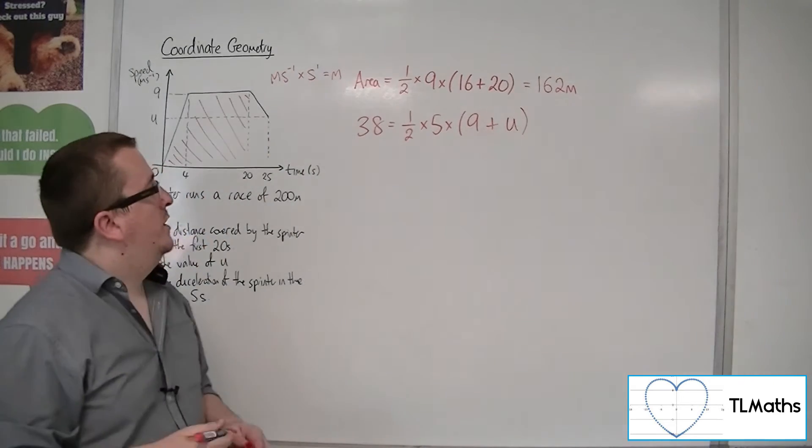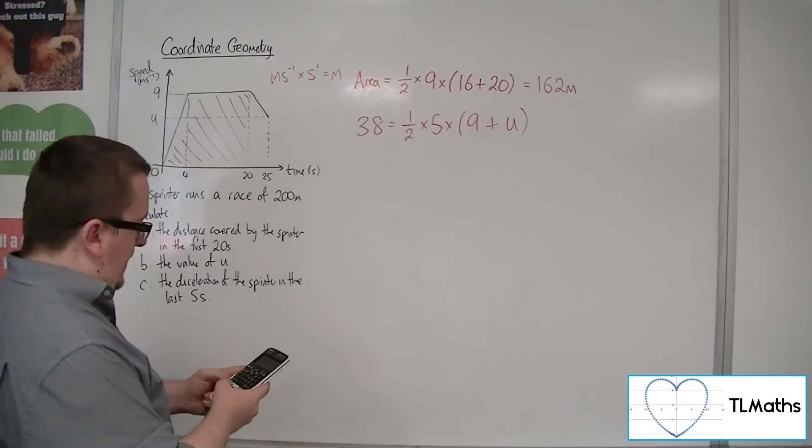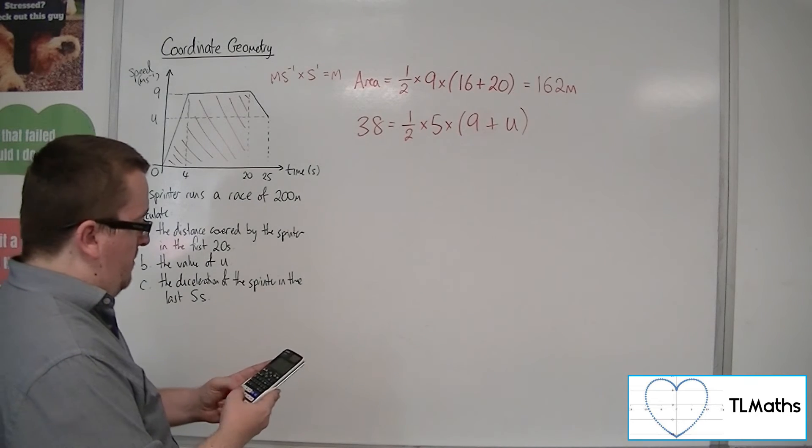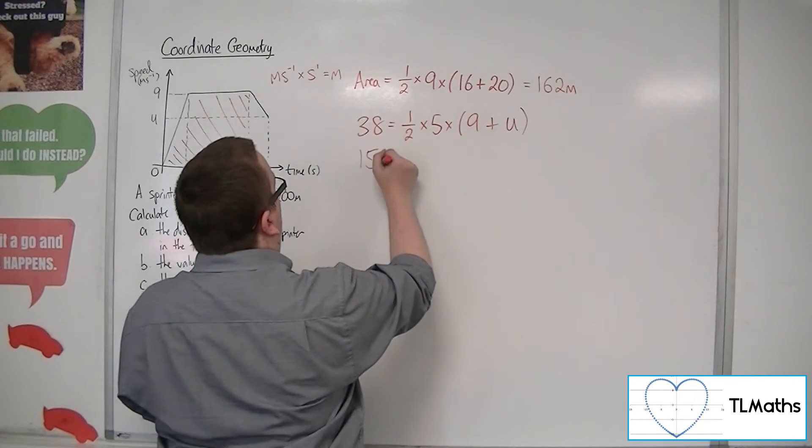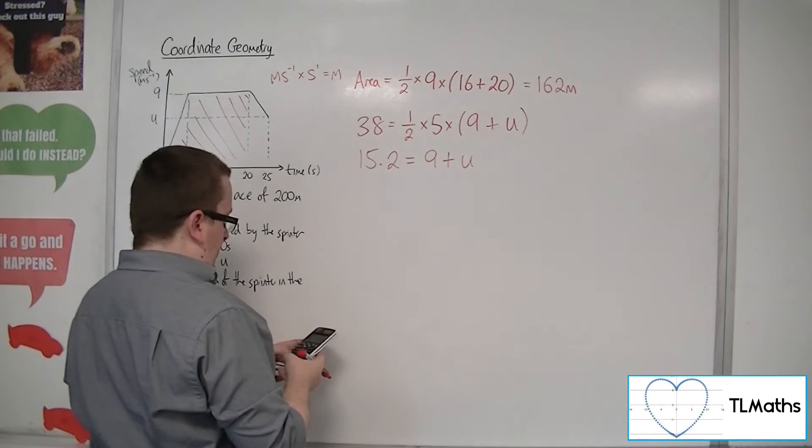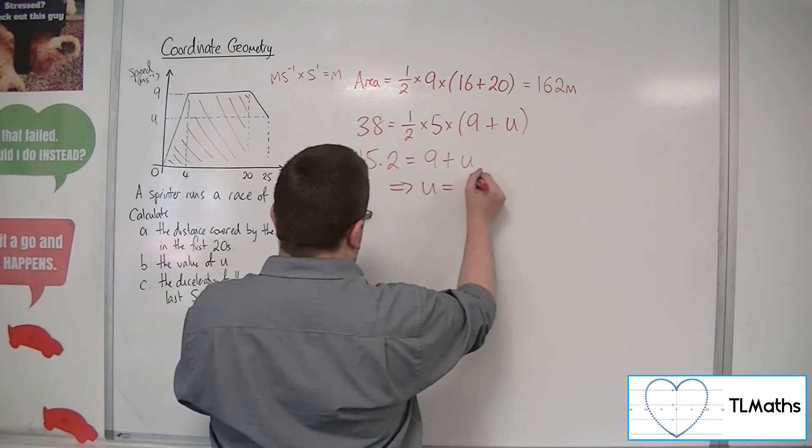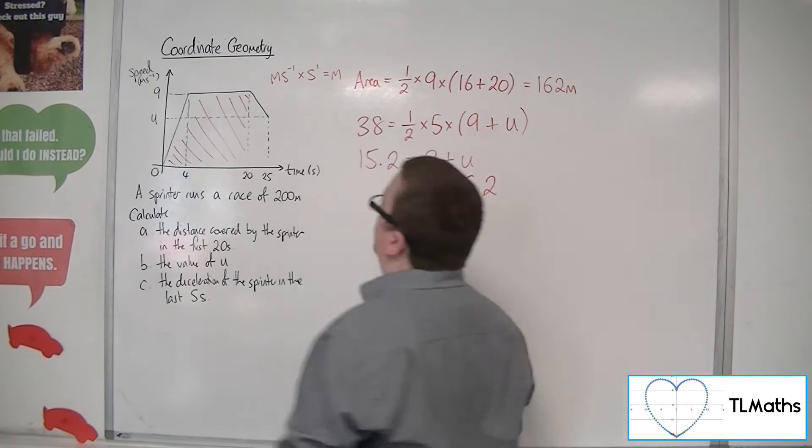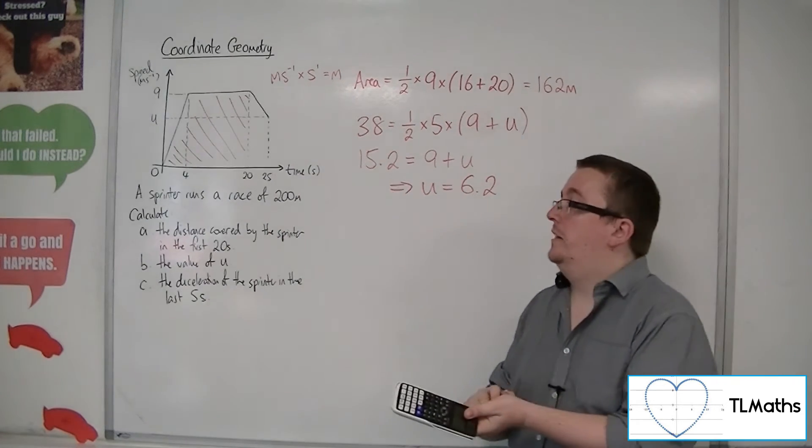...plus height of that side, which is u. So I need to reorganise this equation. 38 times both sides by 2, divide both sides by 5, we get 15.2 equals 9 plus u. Then take 9 from both sides, so u must be 6.2. So they end up at 6.2 metres per second.